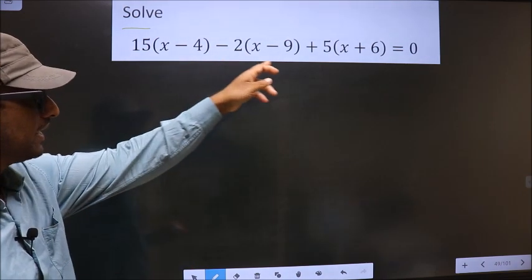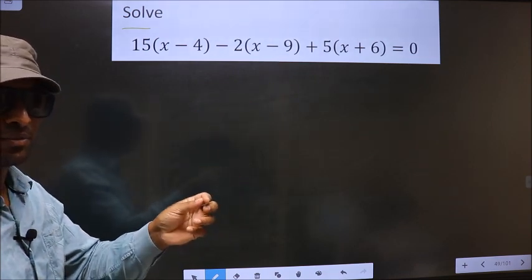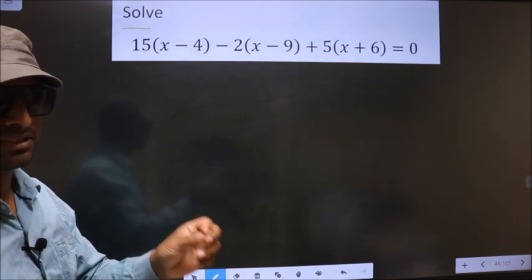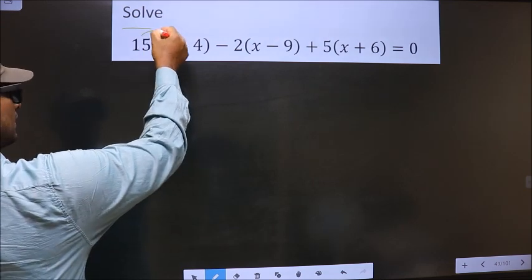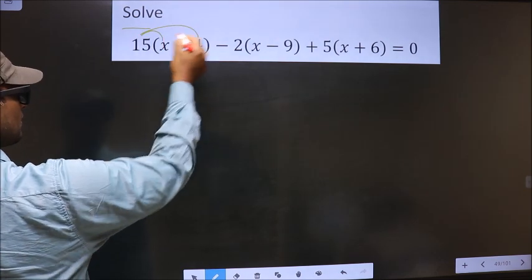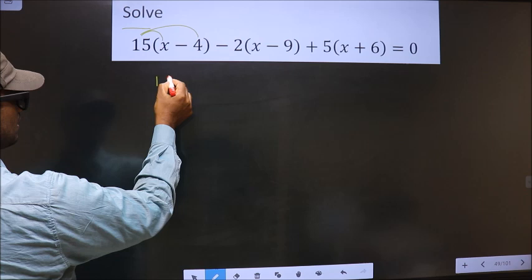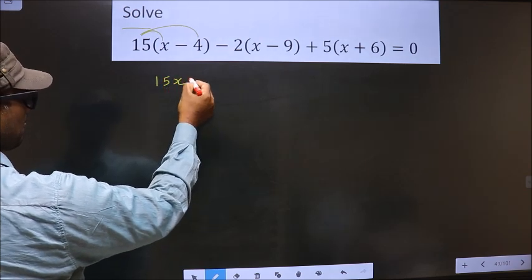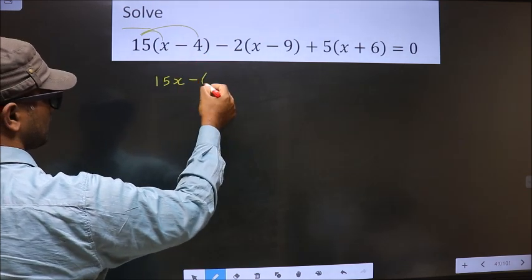For this equation first we have to open up the bracket in this way. So 15 times x is 15x, minus 15 into 4 is 60.